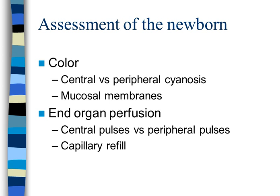Assess color — central versus peripheral cyanosis. Check mucous membranes: eyes, tongue, lips, nasal passages — are they pink and moist or dry and pale? For organ perfusion, assess central versus peripheral pulses and capillary refill. Peripheral cyanosis typically correlates with weak peripheral pulses; central cyanosis correlates with weak central pulses. Check brachial and carotid pulses on newborns.